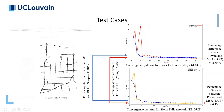Here are the results of our large-scale network, the Sioux Falls network. We observe about 12% difference in total travel time between P-swap and MSA in the system optimal scenarios. This amount is 4% for user equilibrium scenarios. Also, there is a 5% difference between system optimal and user equilibrium using MSA, and about 12% difference between system optimal and user equilibrium for the P-swap algorithm.